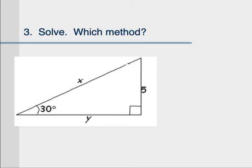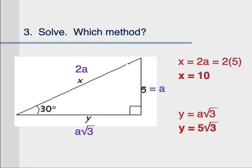Take a moment to label the sides. The short side is always a. The hypotenuse is always 2a. And the medium side is always a radical 3. So what would x be? X equals 2a. And you already know a is 5, so x equals 10. What would y equal? Y equals a square root of 3. So you plug in 5 for a. Y equals 5 square root of 3.